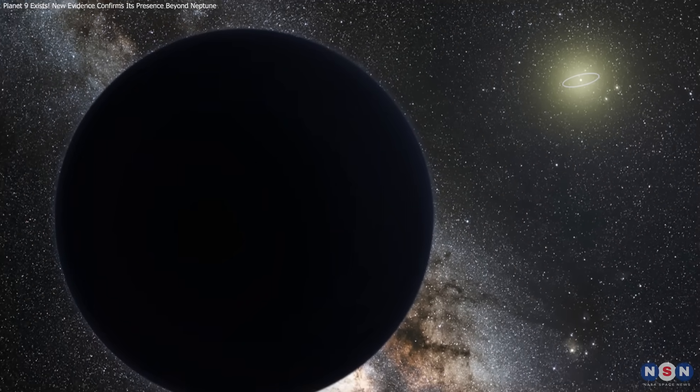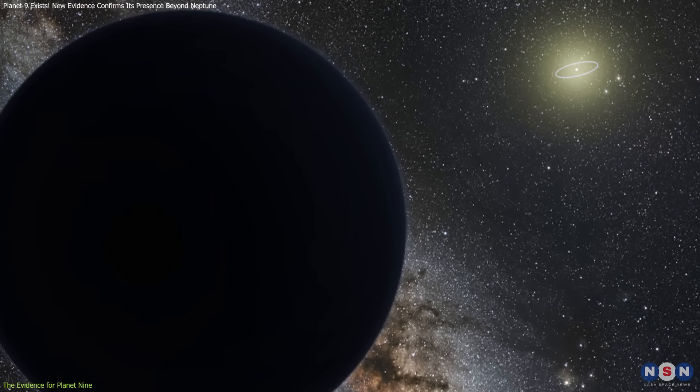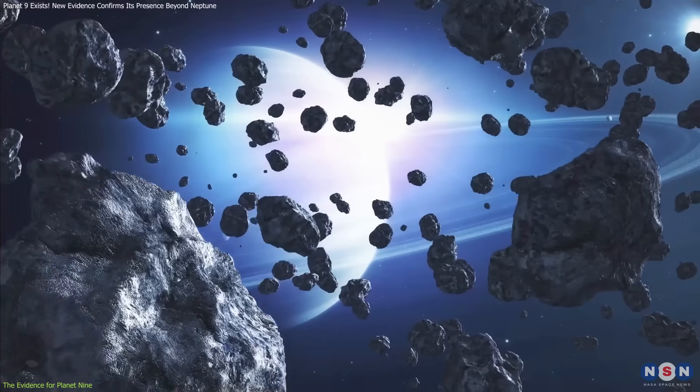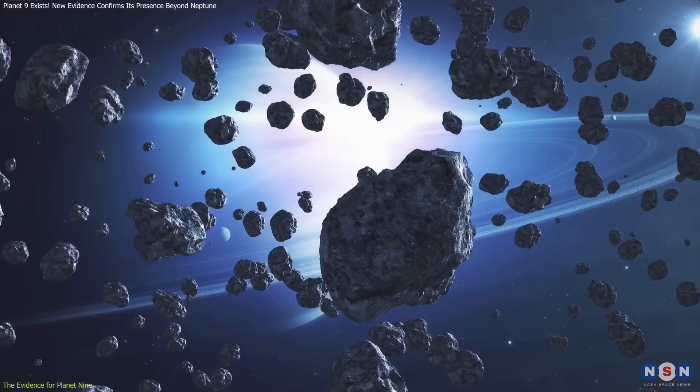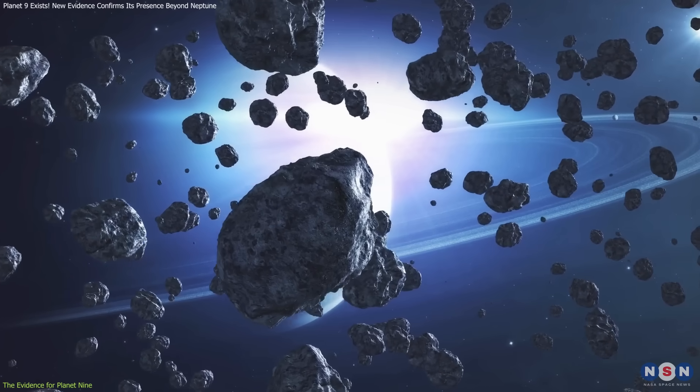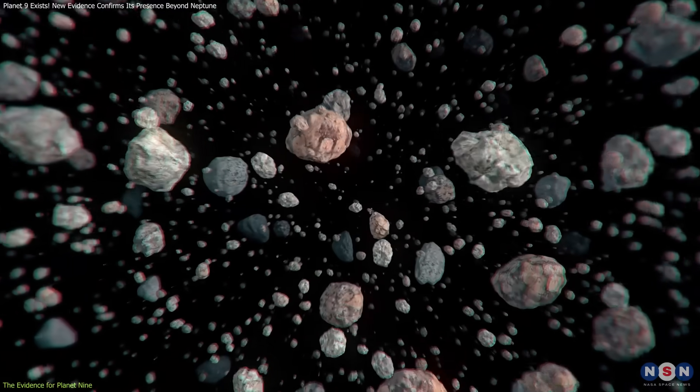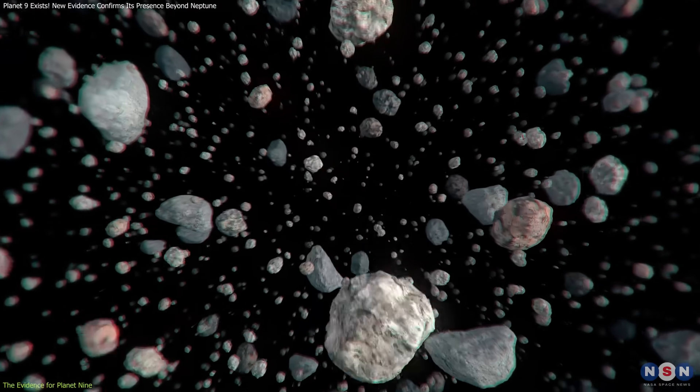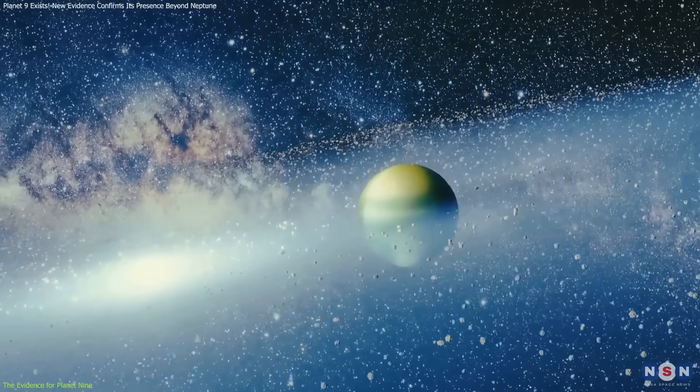First, let's get into the evidence that led scientists to hypothesize the existence of Planet Nine. The story starts with strange orbits of objects beyond Neptune, known as trans-Neptunian objects. These icy bodies, often inhabiting the Kuiper Belt, exhibit odd behavior that defies explanation unless there's a hidden giant out there influencing them.